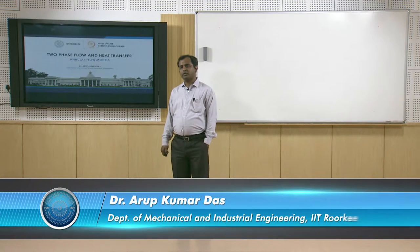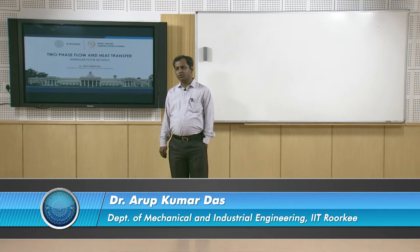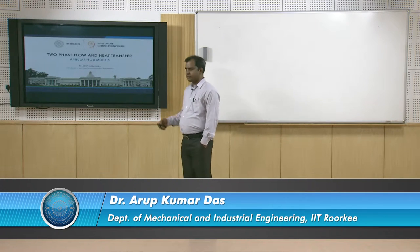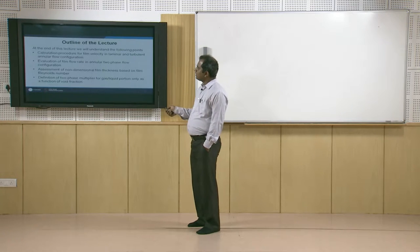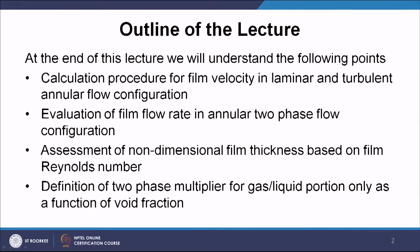Welcome to the 8th lecture of the course two-phase flow and heat transfer. In this course, we will be understanding annular flow models. Annular flow is a typical flow pattern in gas-liquid two-phase flow, where we find the liquid film adhered to the pipe and in the core of the tube we find the gaseous phase. In this lecture, we will stress the calculation of film velocity in both laminar and turbulent regimes, evaluate film flow rate in the annular two-phase flow configuration, assess non-dimensional film thickness based on film Reynolds number, and define the two-phase multiplier for gas or liquid portion only as a function of void fraction.